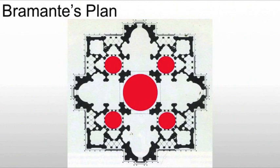We also see a great deal of symmetry. During Bramante's lifetime, construction only advanced to the foundation as well as some of the piers. In 1546, construction passed to Michelangelo. He had been working to get this commission for a long time, and he finally gets the job.